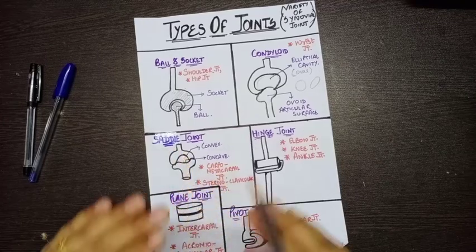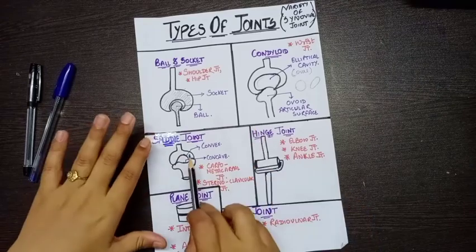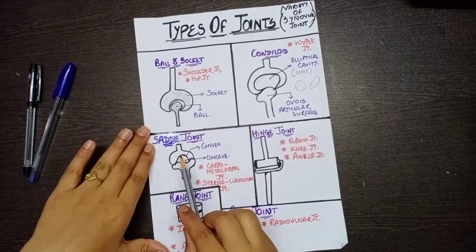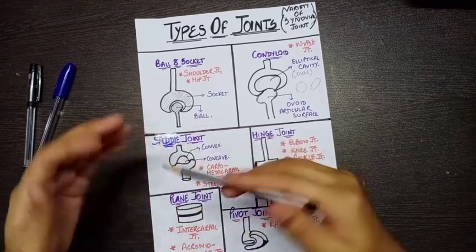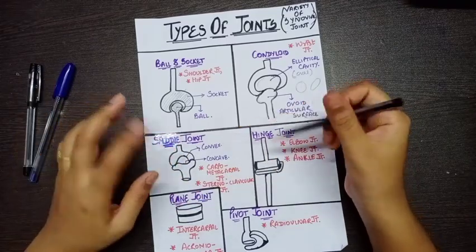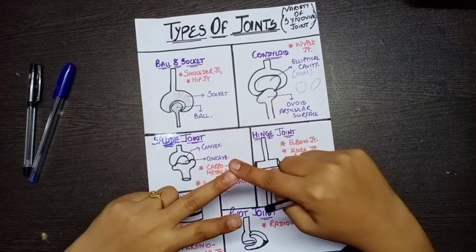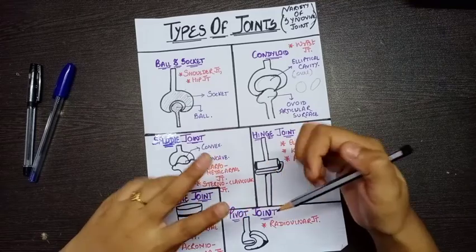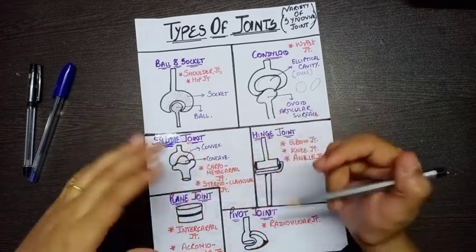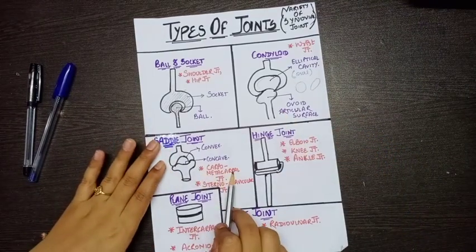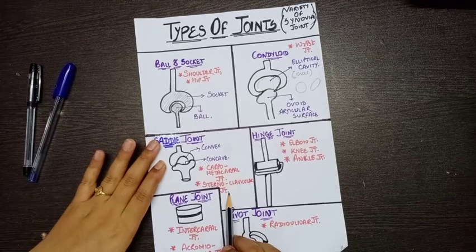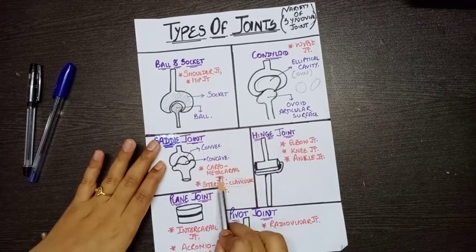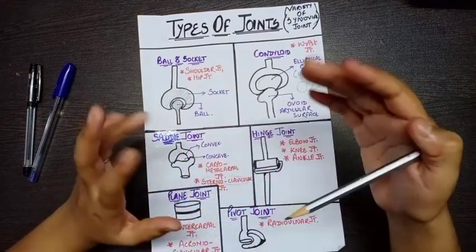Next is the saddle joint. A saddle is the seat placed on a horse — that is where the name comes from. In a saddle joint, one surface is either concave or convex and the other surface is the reciprocal of the first. So if one is concave the other is convex, allowing proper articulation. Examples are the carpometacarpal joint and the sternoclavicular joint, where the clavicle has a convex surface and the sternum has a concave surface.